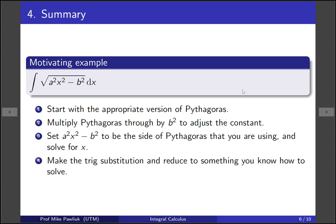Then make the trig substitution as normal, find the derivative, and reduce to something you know how to solve. Okay, let's take this and do another example.